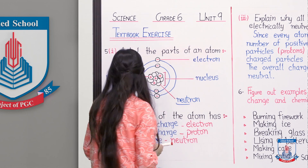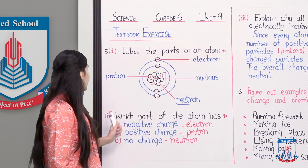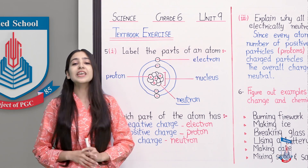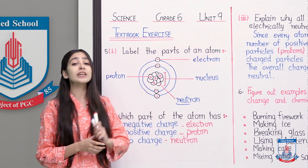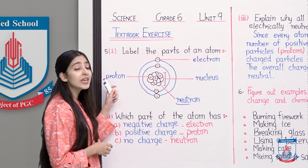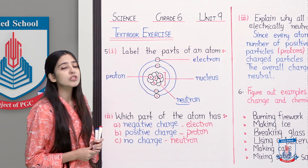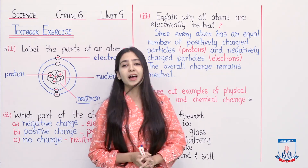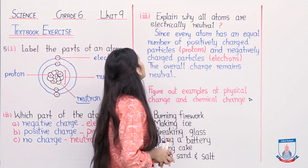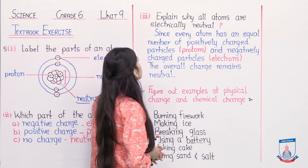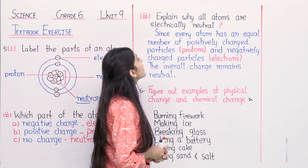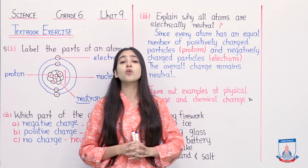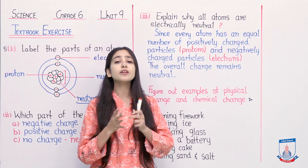So we are done with the first and second questions of question number five. We are left with only one question, that is question number three. Let us see what is asked in the third question. The third question says: explain why all atoms are electrically neutral.